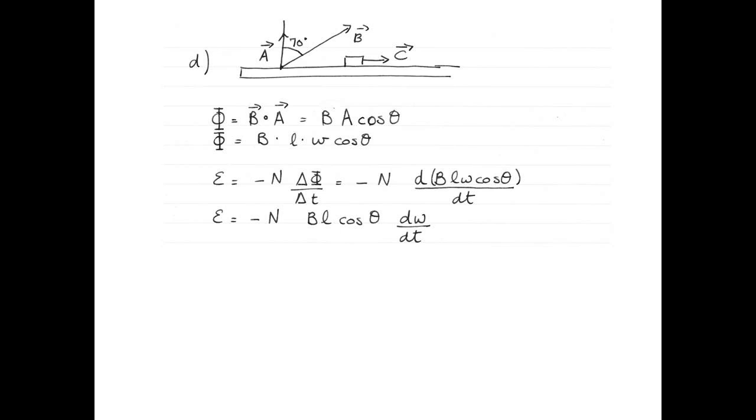And we're left with negative N, BL cos theta, multiplied by the derivative of the width of our shape with respect to time. The derivative of the width of the shape, or the change in the width of the shape, is simply the speed at which the bar is moving. If we rearrange things a little bit, we get something that's more familiar. E equals BLV multiplied by cos theta this time.